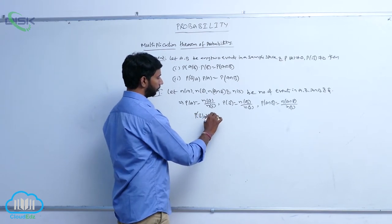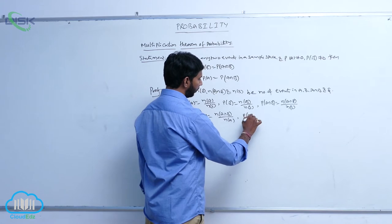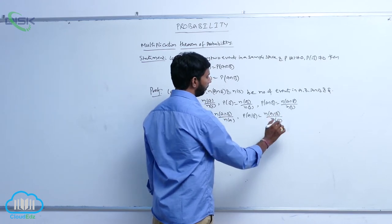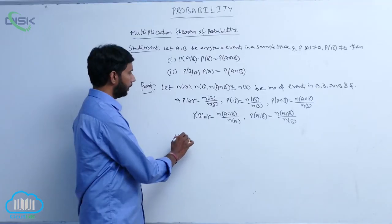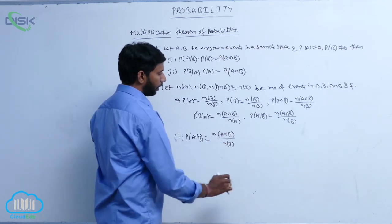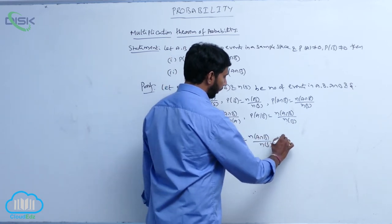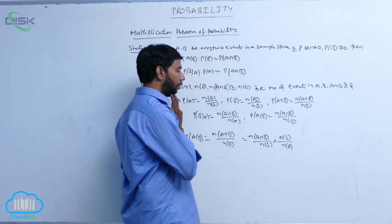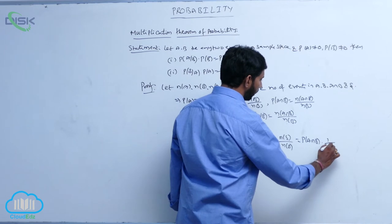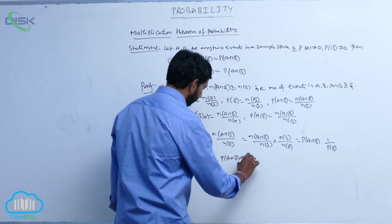P of A given B is equal to N of A intersection B by N of B. Multiply and divide with N of S: that is N of A intersection B by N of S into N of S by N of B. Here N of A intersection B by N of S is P of A intersection B, and N of S by N of B is 1 by P of B. Cross multiplying, P of A intersection B is equal to P of A given B into P of B.